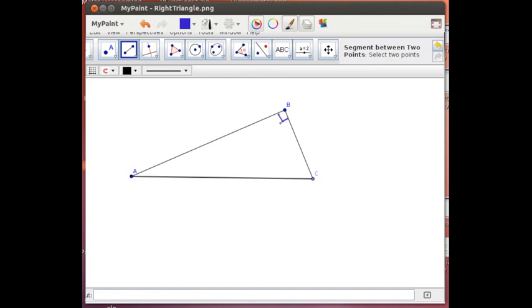There's the right angle up here. Traditionally, instead of labeling that B, people would usually label that C. The traditional way of labeling a right triangle is with the right angle being C. It doesn't have to be that way.